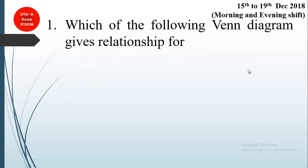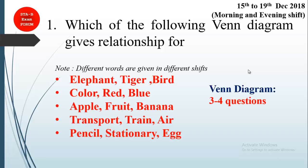Question number one is basically from the Venn diagram category, which asks: which of the following Venn diagrams gives the correct relationship? In that exam, there were three to four questions on Venn diagrams, in both morning and evening shifts with different types. Our students were able to recollect five questions. The first one is the relationship between elephant, tiger, and bird — you have to show how they are related using a Venn diagram.